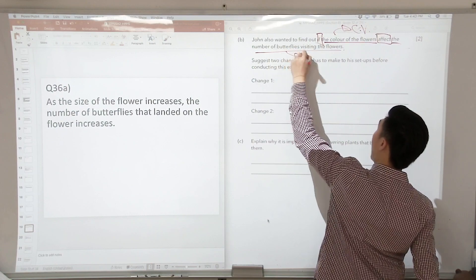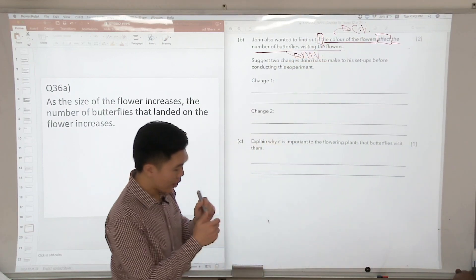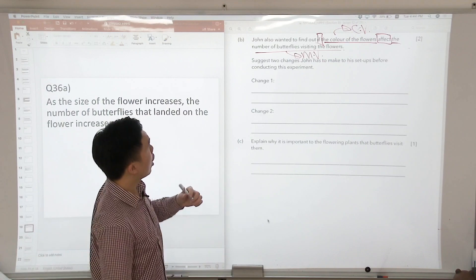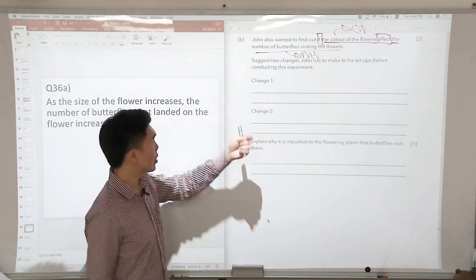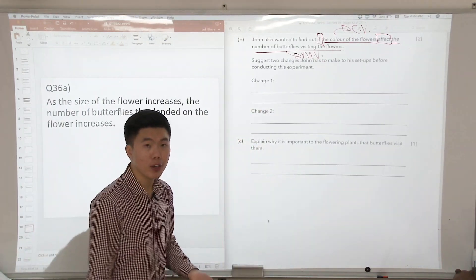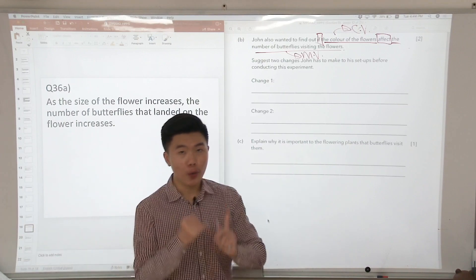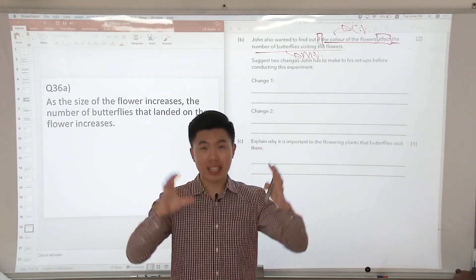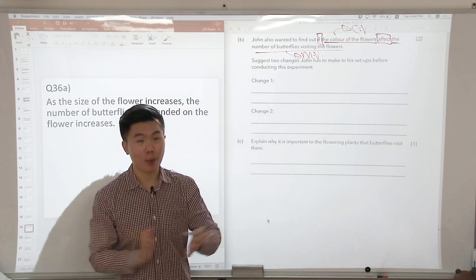So in order to do that, what are the changes that John has to make to ensure that his experiment can now be carried out? We are going to make the size of the petals the same because we are no longer testing the size of the petals.